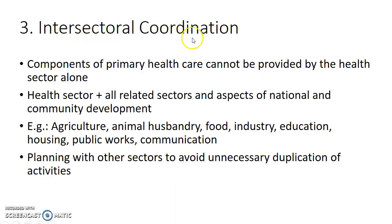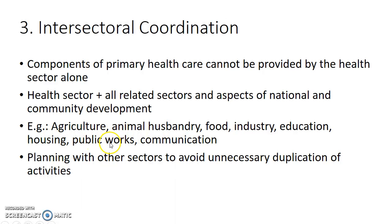Now let us see about intersectoral coordination. The components of primary health care cannot be provided by the health sector alone. So there should be coordination between the health sector and all related sectors and aspects of national and community development. Sectors like agriculture, animal husbandry, food, industry, education, housing, public works and communication should coordinate with the health sector for providing primary health care. There should also be planning with other sectors to avoid unnecessary duplication of activities.